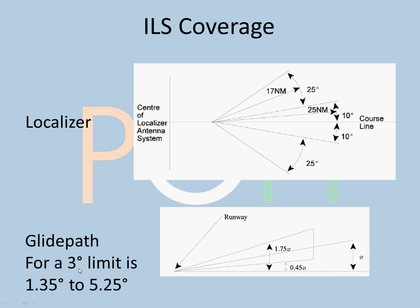For a 3 degree glide slope, this is generally the standard glide slope across the world, 3 degrees. The limit is 1.35 to 5.25 degrees. So the range of the glide slope signal that you will receive is between 1.35 to 5.25 degrees.